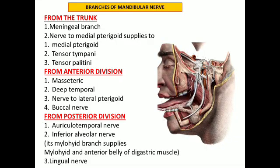The branches from the mandibular nerve are categorized into branches from the trunk, anterior division, and posterior division. From the trunk: the meningeal branch (nervus spinosus) passes back through the foramen spinosum to supply the dura mater; and the nerve to medial pterygoid, which supplies the medial pterygoid and provides branches to tensor tympani and tensor palatini, passing through the otic ganglion without relaying.